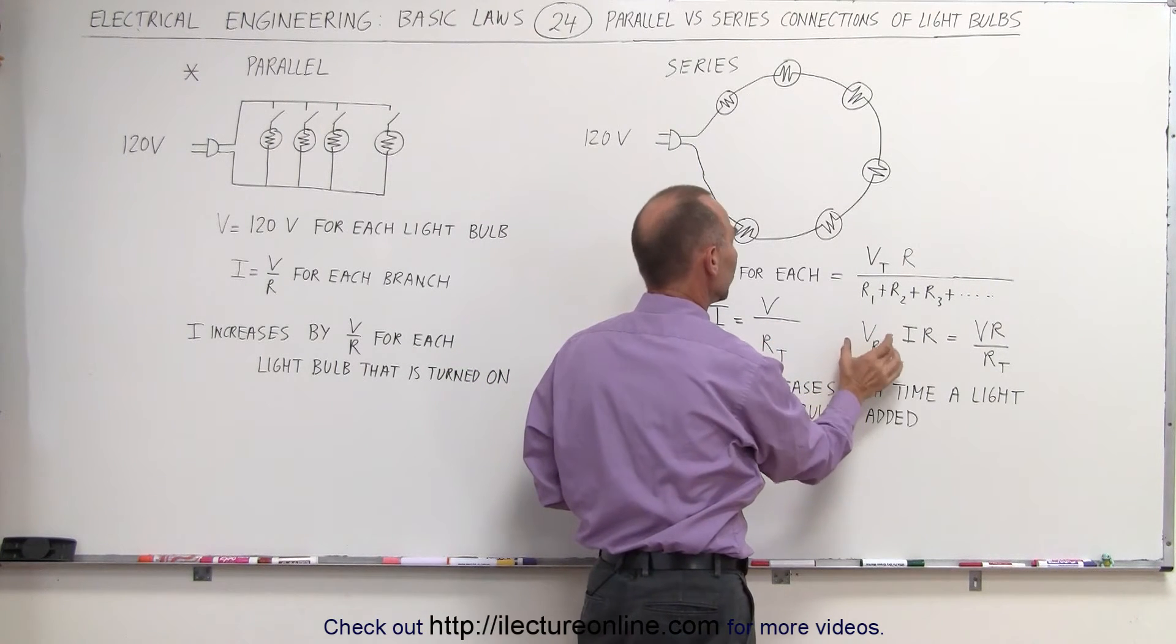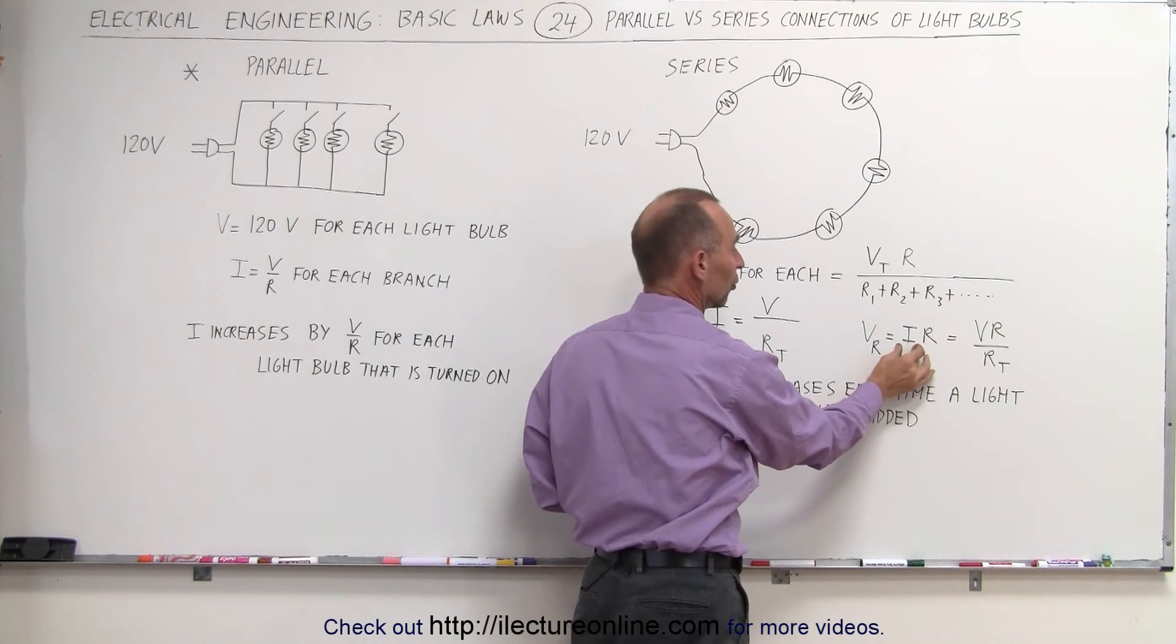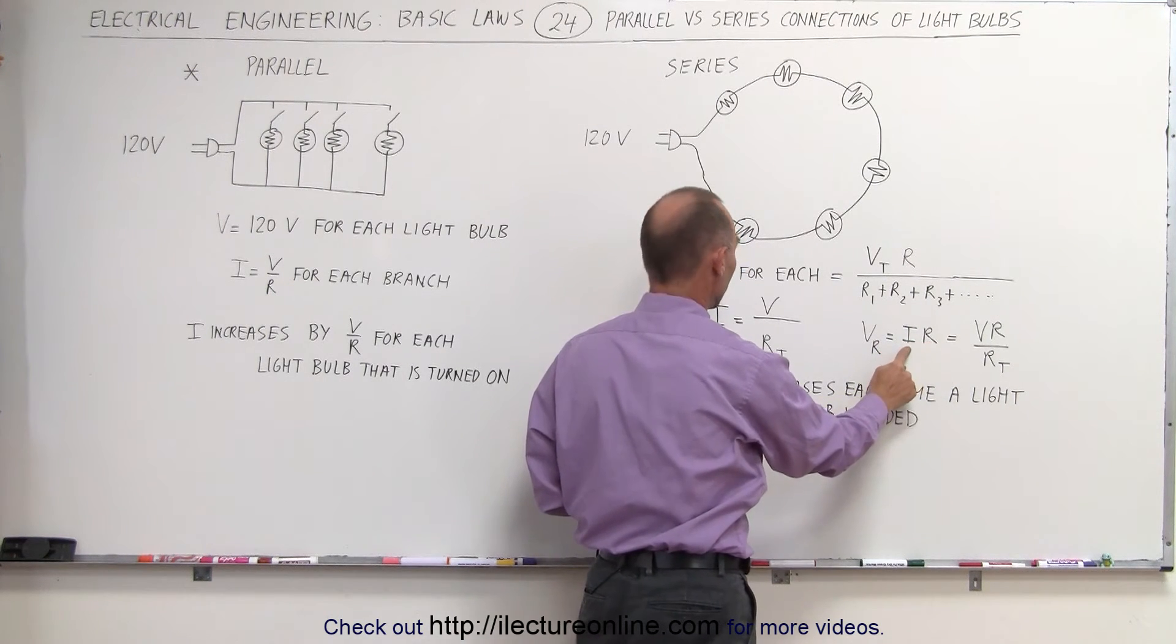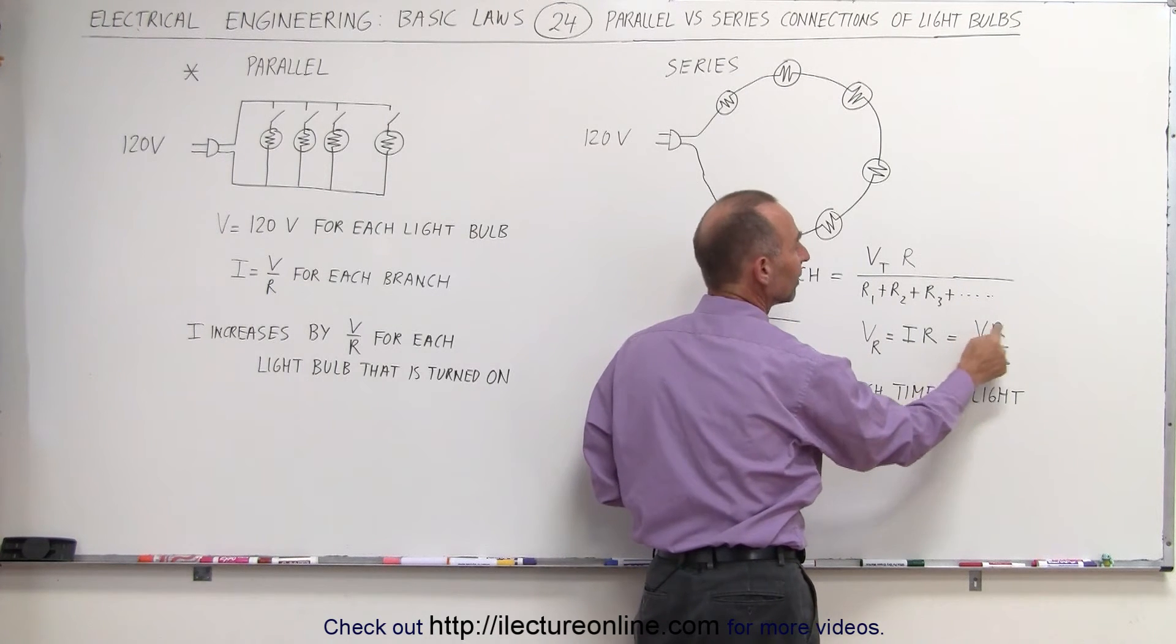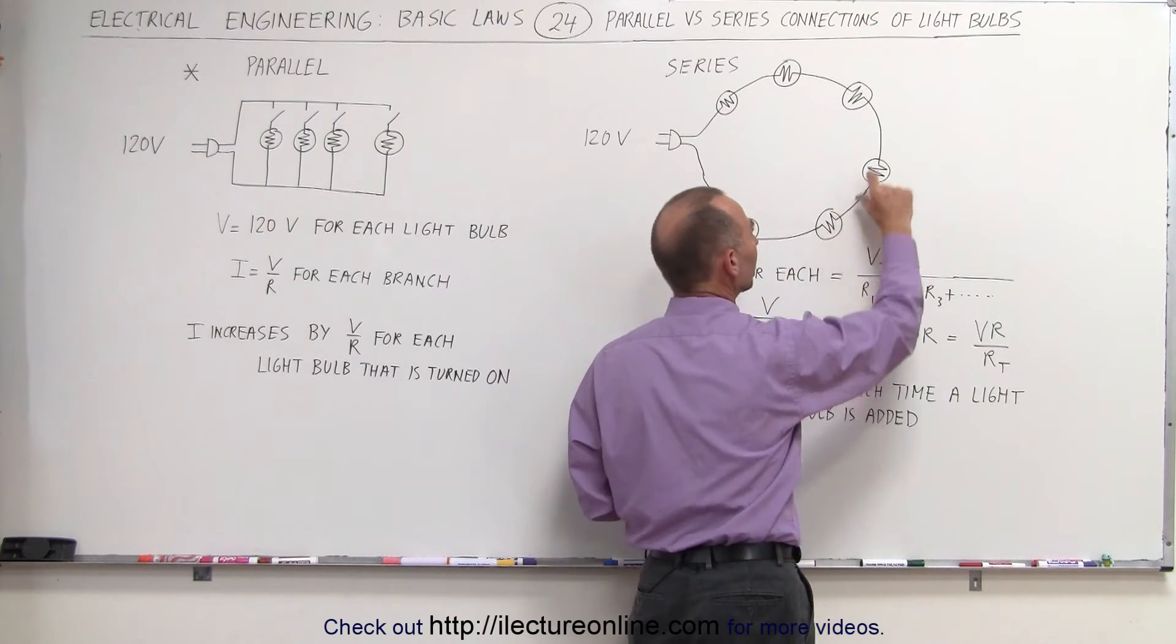Therefore, V sub R, the resistance across each light bulb, which is like a resistor, is the current through the circuit times the resistance. And the current being V over R can be written as V times R divided by R total. That will be the voltage drop across each resistor.